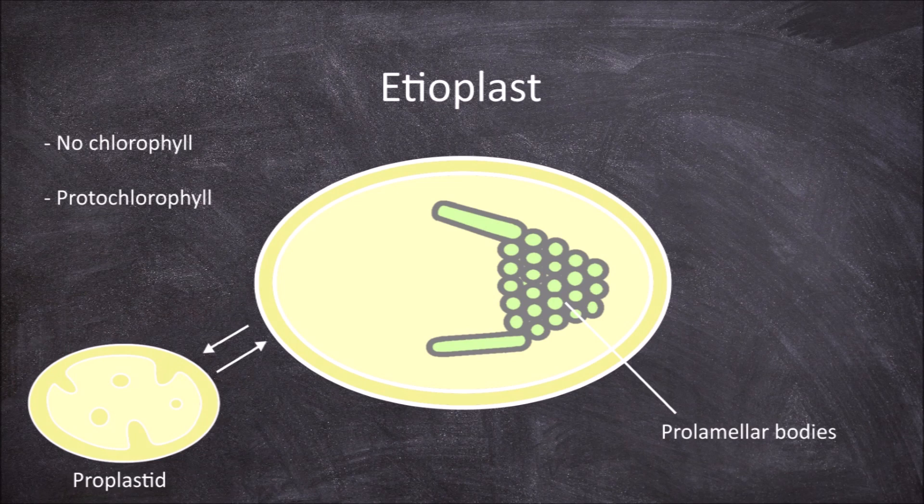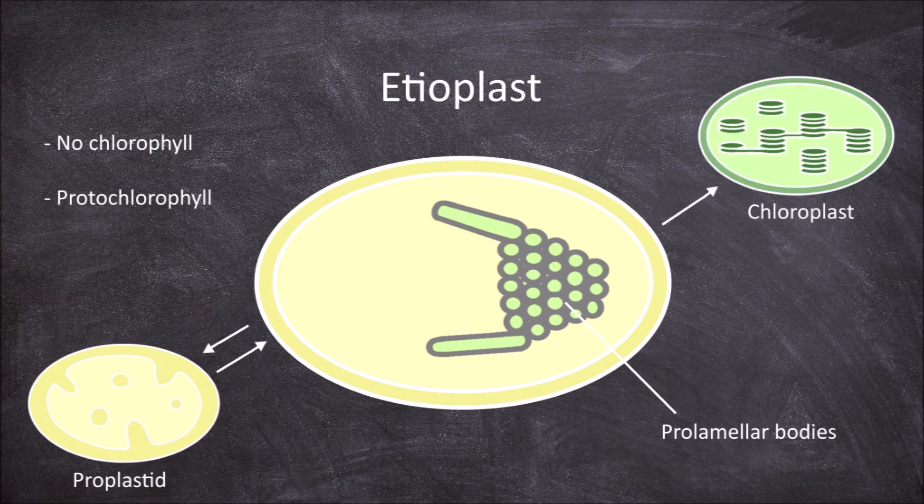Etioplasts can convert into chloroplasts with exposure to light. When exposed to light, the protochlorophyll converts into chlorophyll, and the pro-lamella body changes into the thylakoid and stroma. This process is reversible during long periods of darkness.